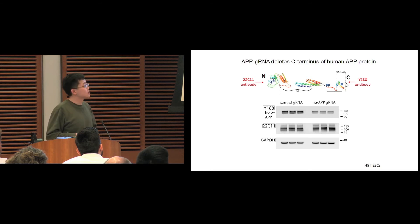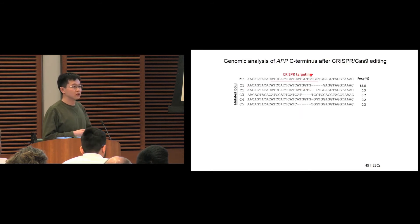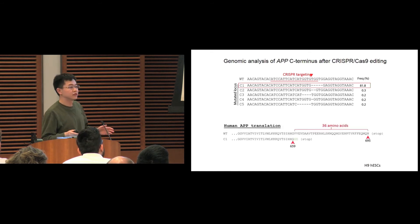To further confirm this, we did a deep sequencing analysis. We found that with CRISPR expression, over 80% of APP genes got a five-base pair deletion at the CRISPR targeting site. This five-base pair deletion caused an early termination of protein translation, so that the truncated protein lost the last 36 amino acids from the C-terminal.